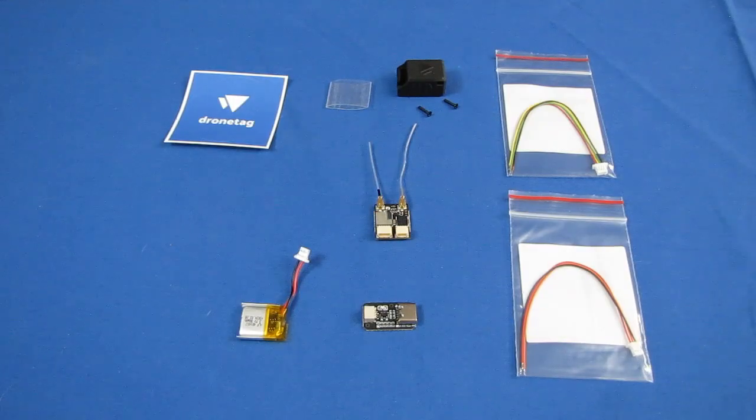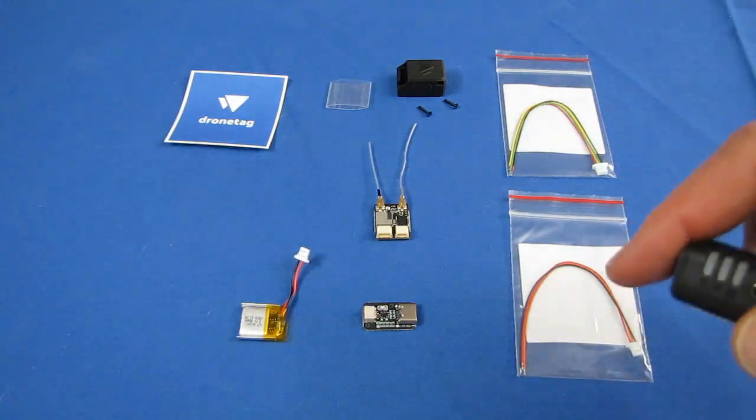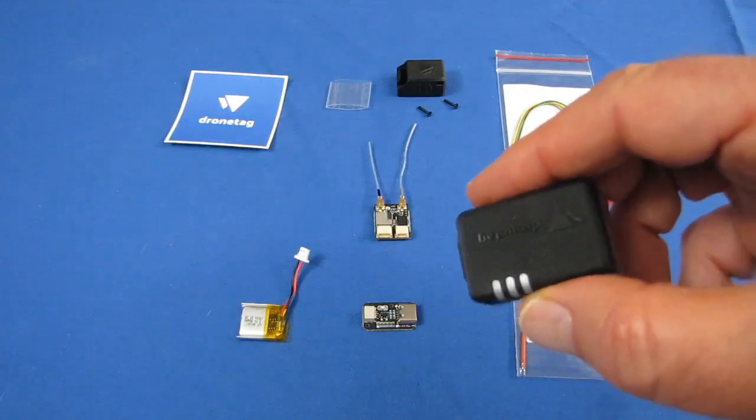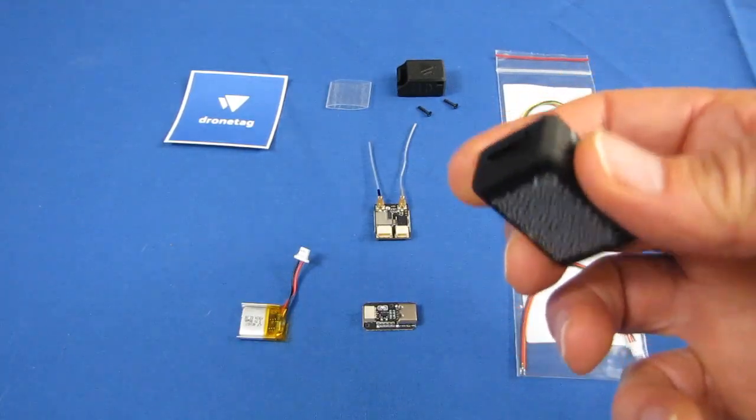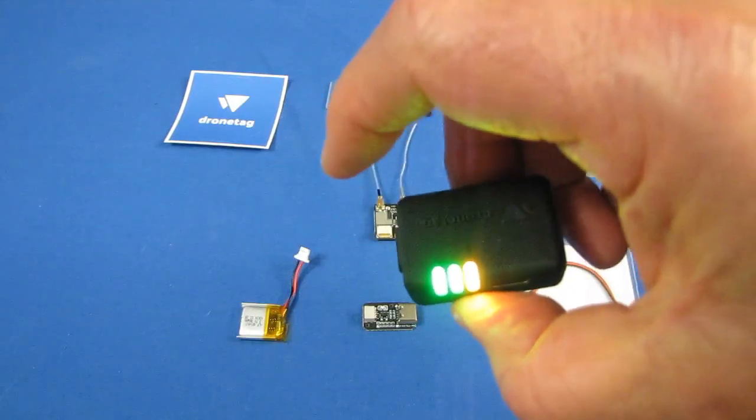Now, the remote ID modules that are out there, there's a lot of them that are ready to go. Here's one from DroneTag, actually, this little one here. But DroneTag makes an assortment of different remote ID modules. They have one that's an all-in-one that's built and ready to go, and all you do is turn it on and off like so to get it started.